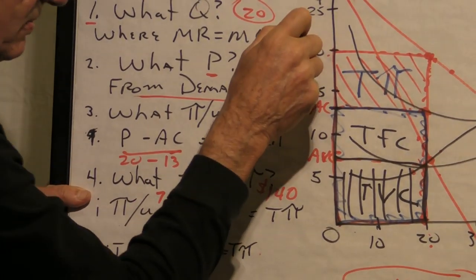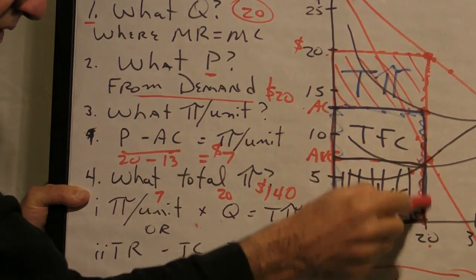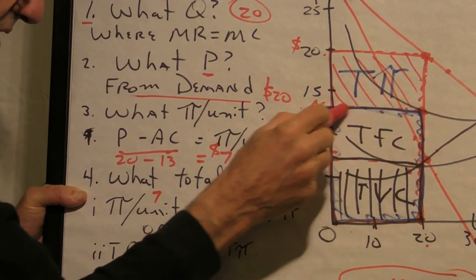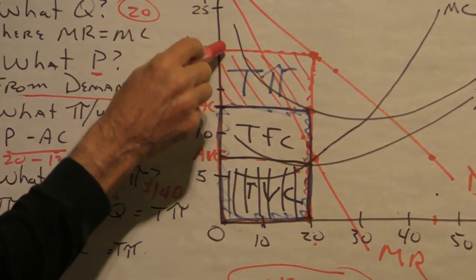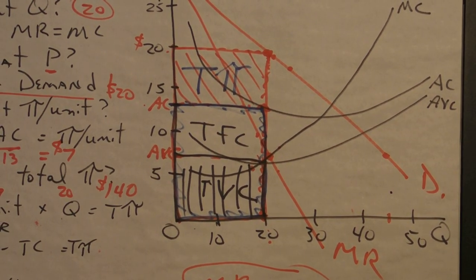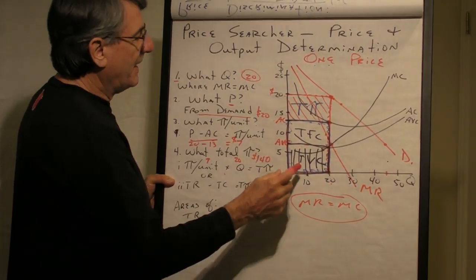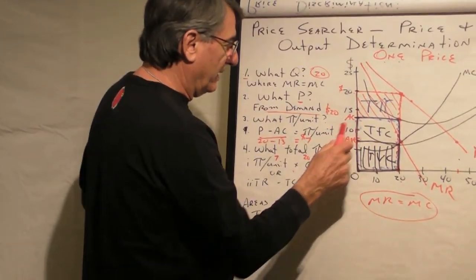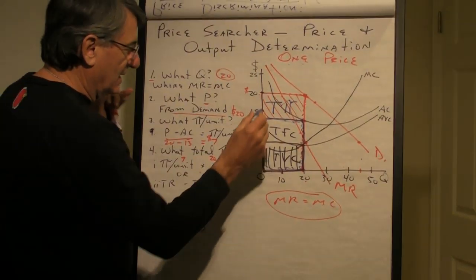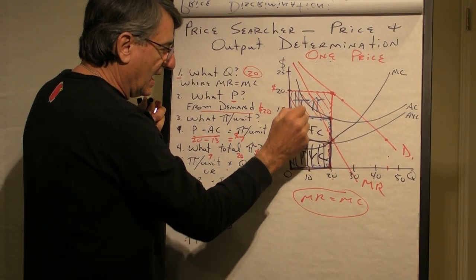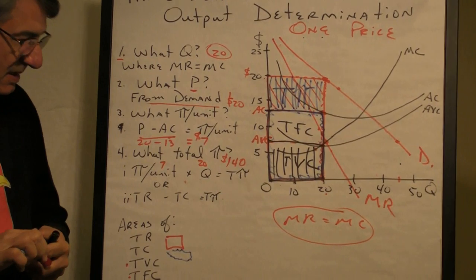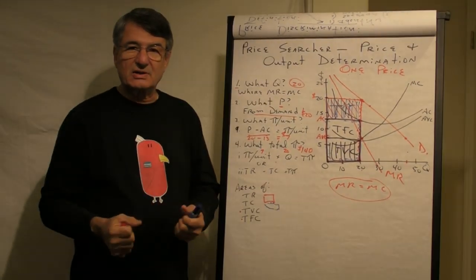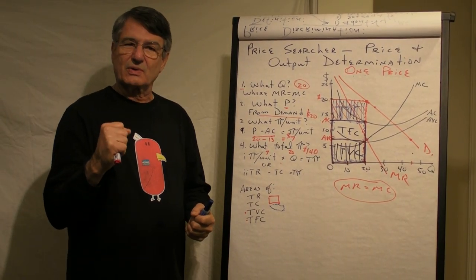To calculate the profit per unit, you take the price, which you've just discovered, and find the point on the average cost curve that corresponds to the quantity you're going to produce. That's your average cost, and the difference between these two numbers, that's your profit per unit. And your total profit will be, in this case, $7 times on each of the 20 units you're producing. So, that's price output determination for a price searcher that charges one price to everyone.